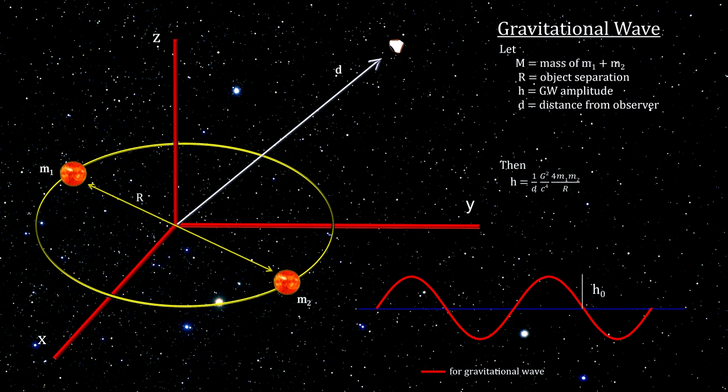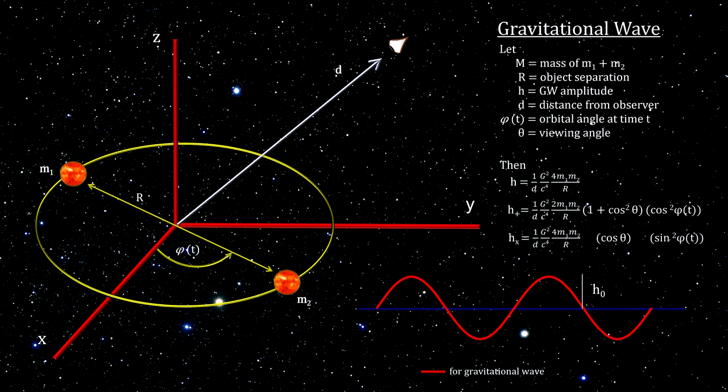The amplitude of the gravitational wave depends on the masses of the two objects and the distance between them. In addition, we need to consider the angular rotation and the viewing angle to determine the strength of each polarity at any point in time.